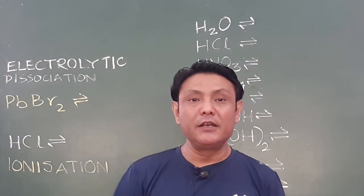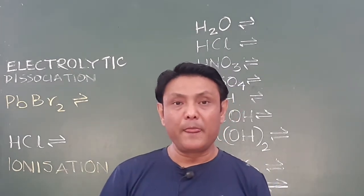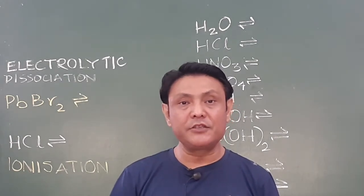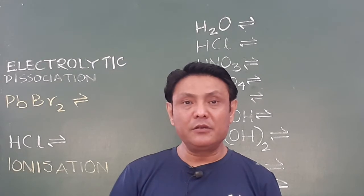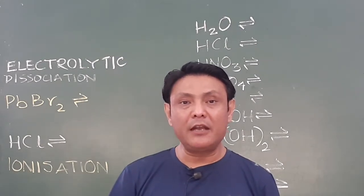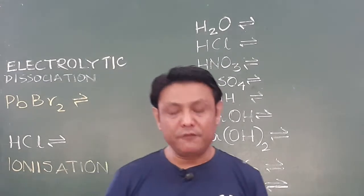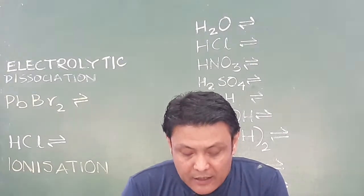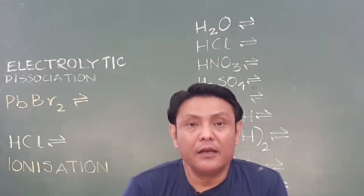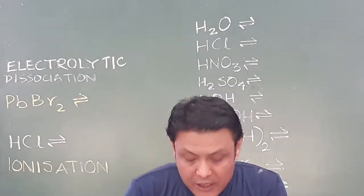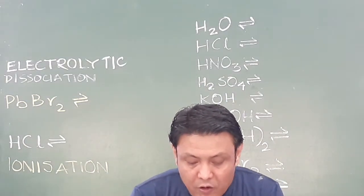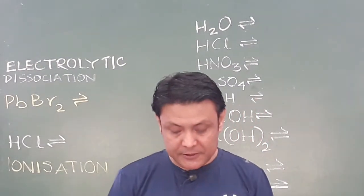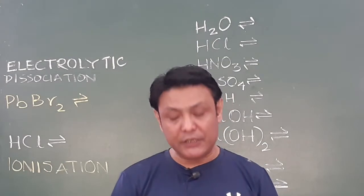Cations are positively charged ions and they are usually the ions of metals, hydrogen, and ammonium. Please remember: hydrogen, ammonium, and metals are positive ions, whereas anions are the negative ions and they are usually the ions of non-metals. An electrolyte on dissociation in water produces free cations and anions and allows the flow of electricity through it.